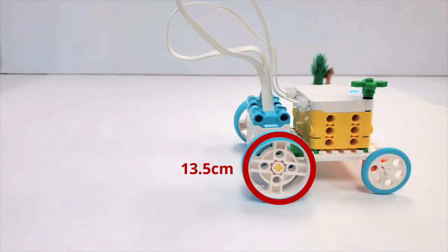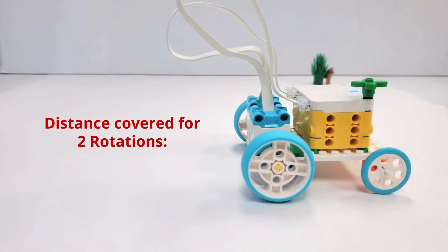Now, let's extend our exploration to understand what happens when Iris completes two rotations. To calculate the distance covered, we can multiply our earlier measurement of 13.5 centimeters by 2.